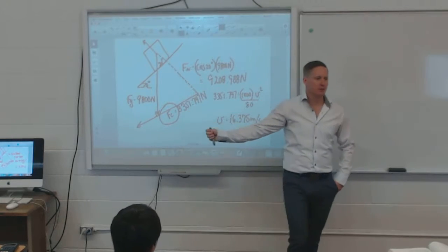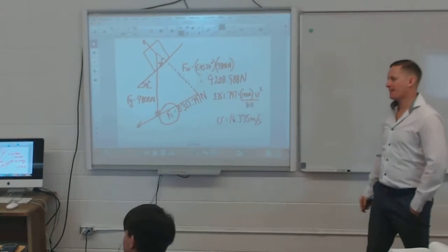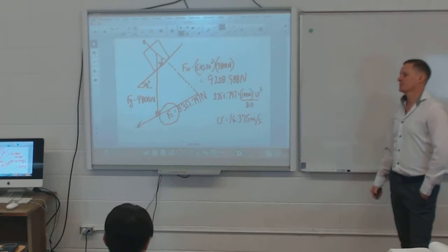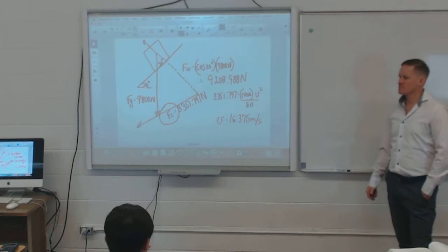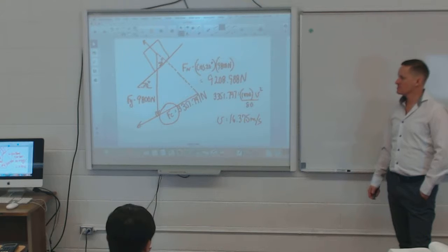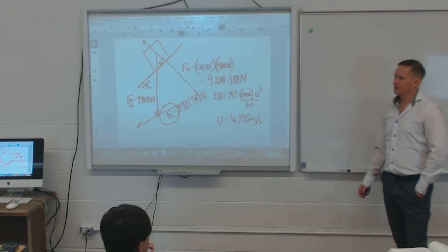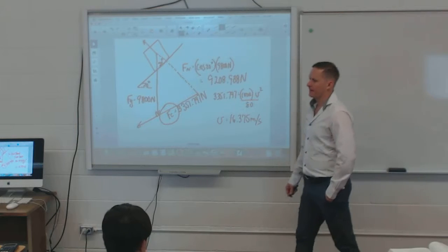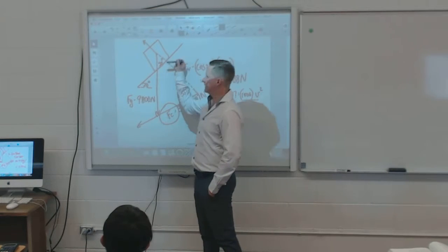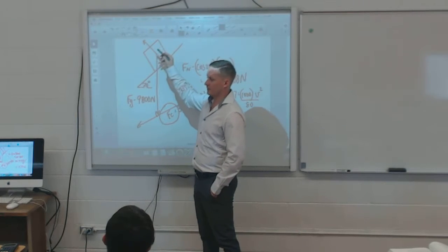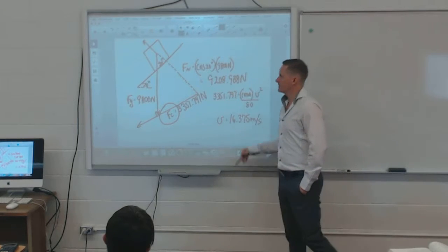The centripetal force is now what we would have called the applied force. We still subtract the force of friction, but here friction would actually help you — you'd add it. In this frictionless case, the car isn't sliding; we want it to stay on the banked curve moving in that direction.